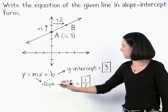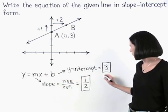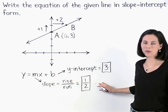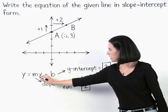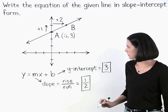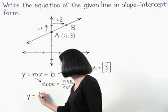Therefore, m equals one-half and b equals three. And we substitute these values into our formula for m and b to get y equals one-half x plus three.